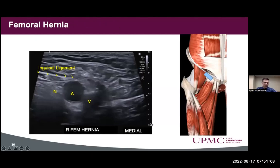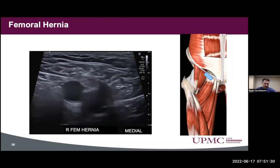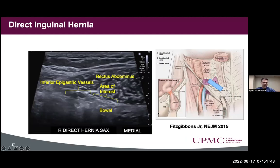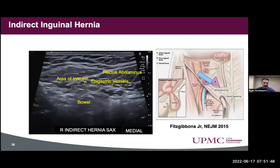The inguinal ligament is somewhat oblique, and we have the femoral neurovascular bundle nearby. A little pearl: if you're looking for a hernia in this region, as the patient valsalvas, the vein should actually collapse. If there's no hernia and they valsalva, the vein will dilate — which is what we see here. For direct inguinal hernia, find the inferior epigastric vessels and look medial to them; for indirect, look lateral. These hernias really deserve a lecture series on their own and require a lot of experience to become acclimated.